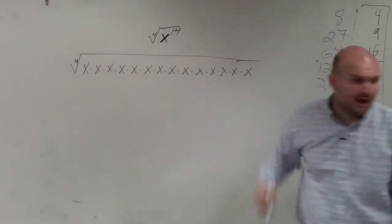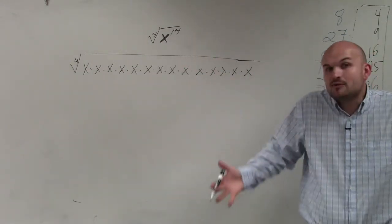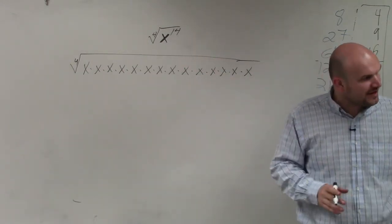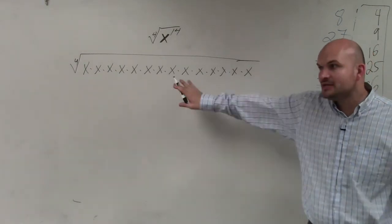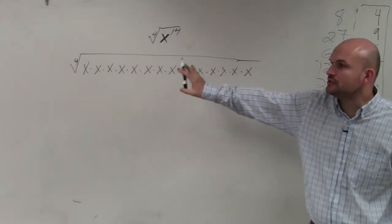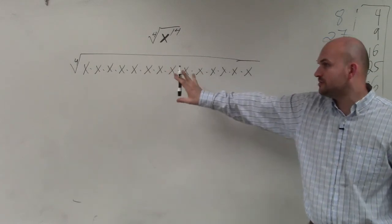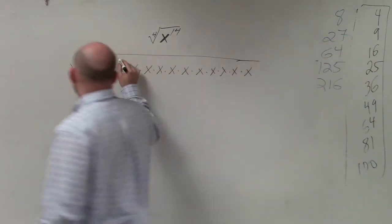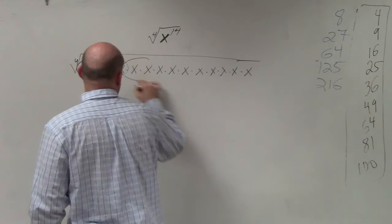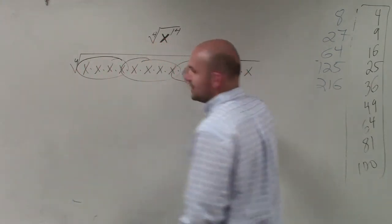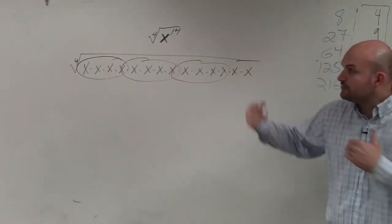But what if I gave you x to the 144th? You're not going to want to write out 144 of them. Correct? Right? So I'm not making you do that. I never did. I showed you, I taught you originally with smaller numbers so that you could see you group in four terms. Right? So you guys can have an understanding of the 4th root.